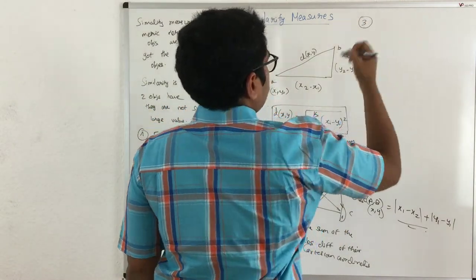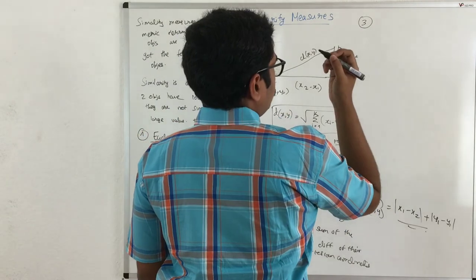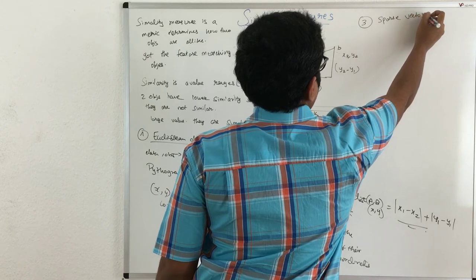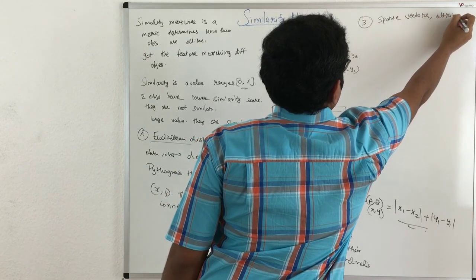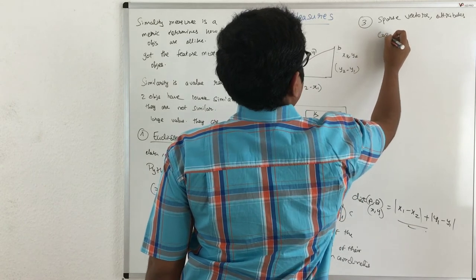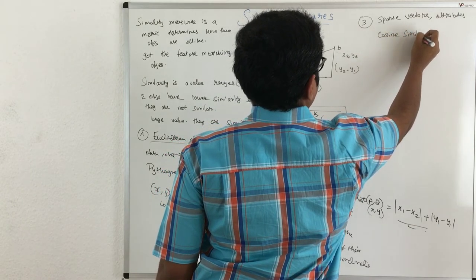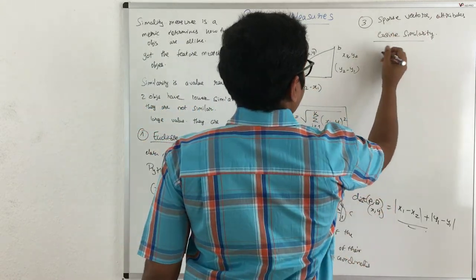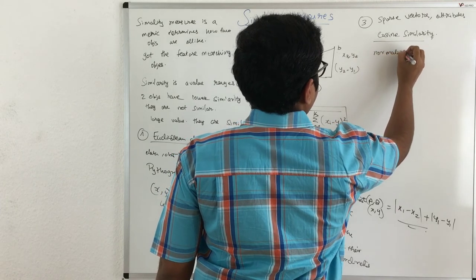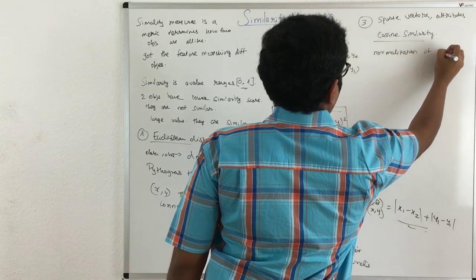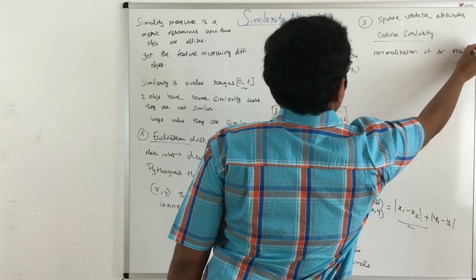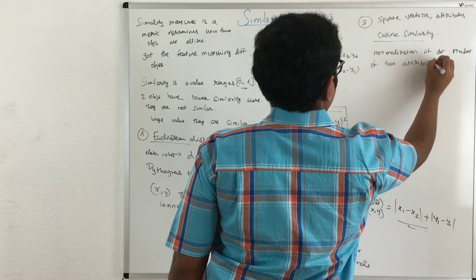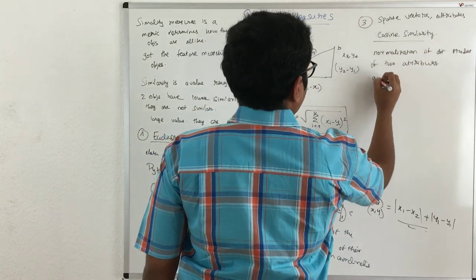Now third type is when we have sparse data, means we have very few data or in fact we can say sparse vectors or attributes, there we mainly use cosine similarity. So cosine similarity essentially finds a normalization of the dot product of two attributes. So it basically finds the angle of separation.